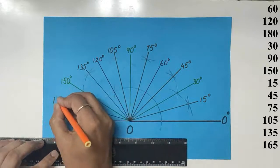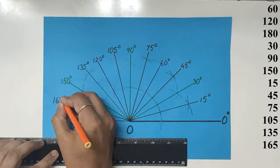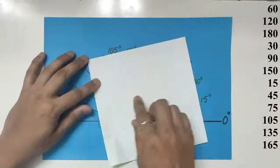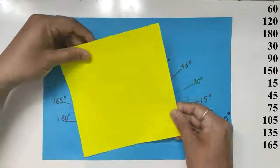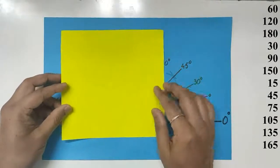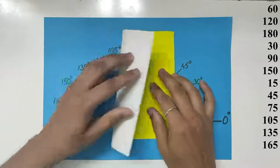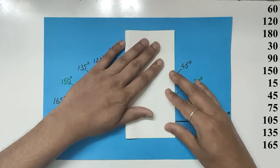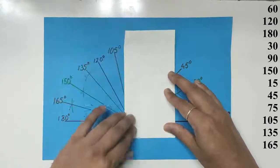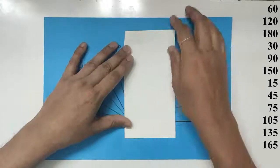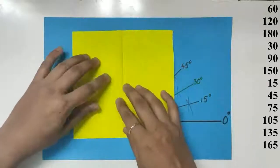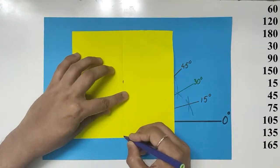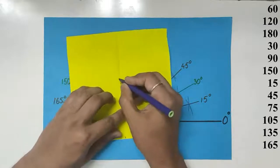So this is how we construct angles of 15 degrees increments using a compass. Now we'll do the same thing using a paper. Take a piece of paper and fold it into half. Once you have folded it, give a good crease. And that will be your 90 degrees. We'll mark the center. That's 90 degrees.